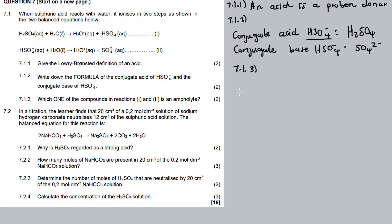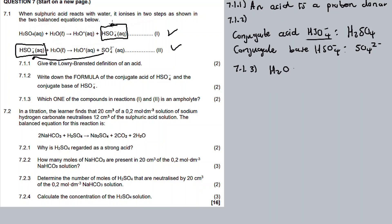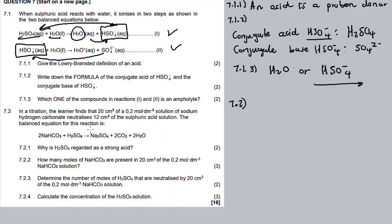Now, which of the compounds in reactions one and two is an ampholyte? An ampholyte is a substance that can act as both an acid and a base. The common one is H₂O. Looking at the reactions, H₂O can act as both an acid and a base. HSO₄⁻ also acts as both — so we can also say HSO₄⁻ is an ampholyte.